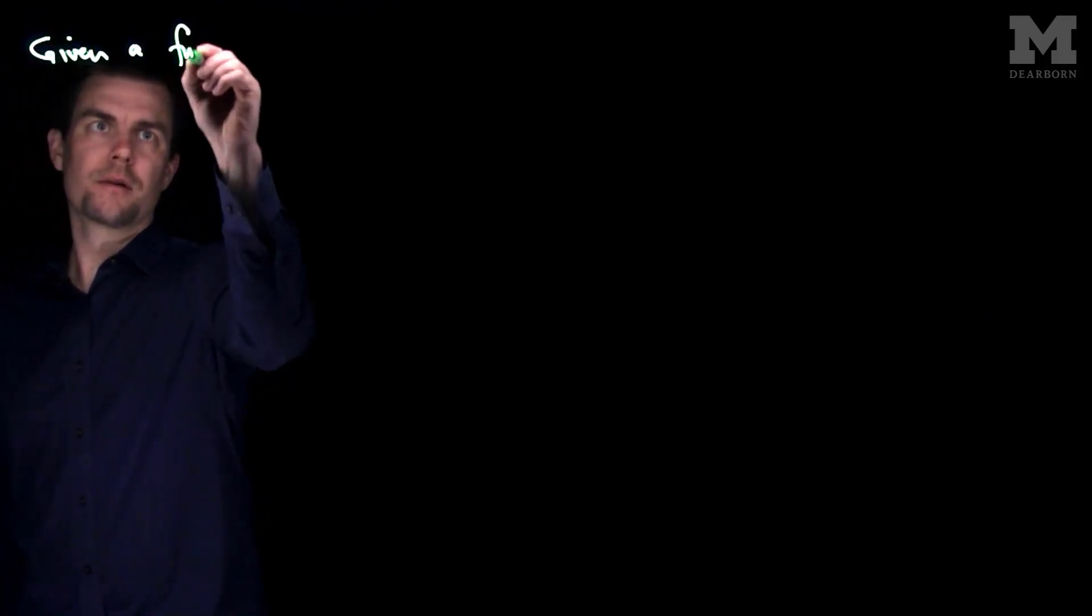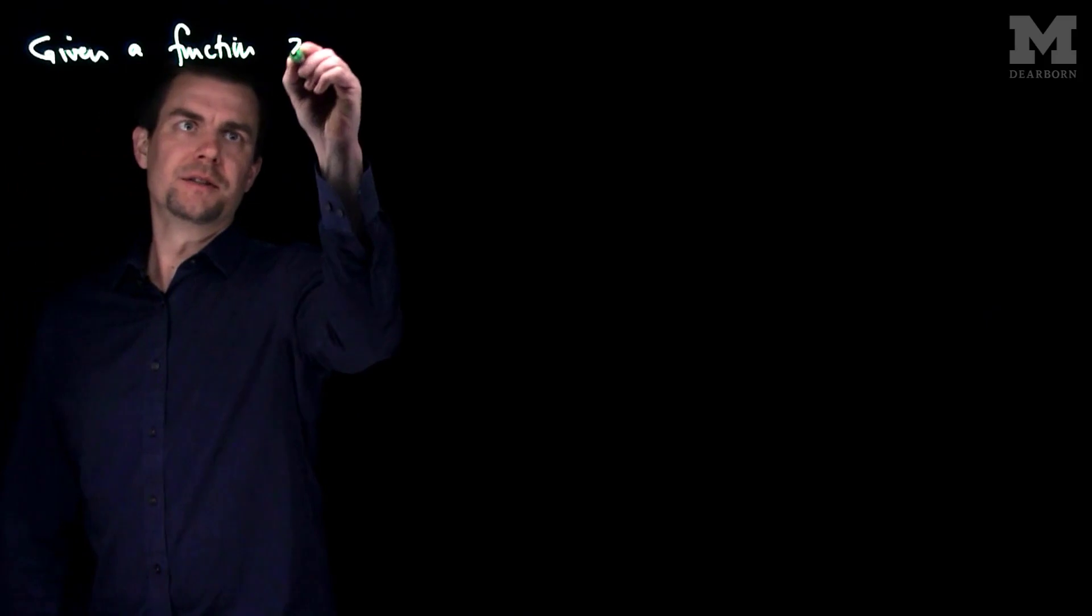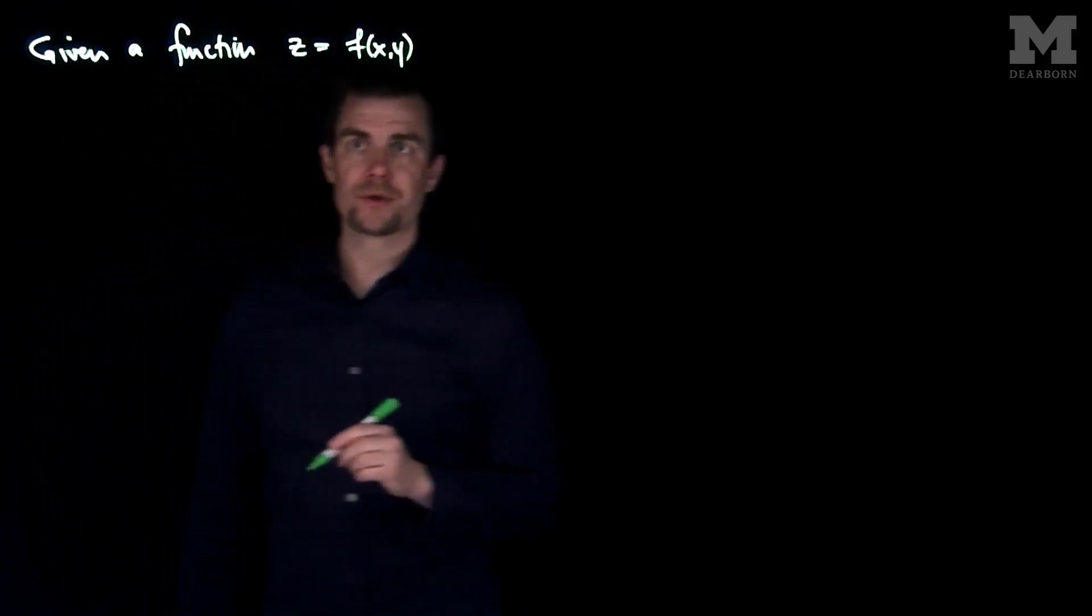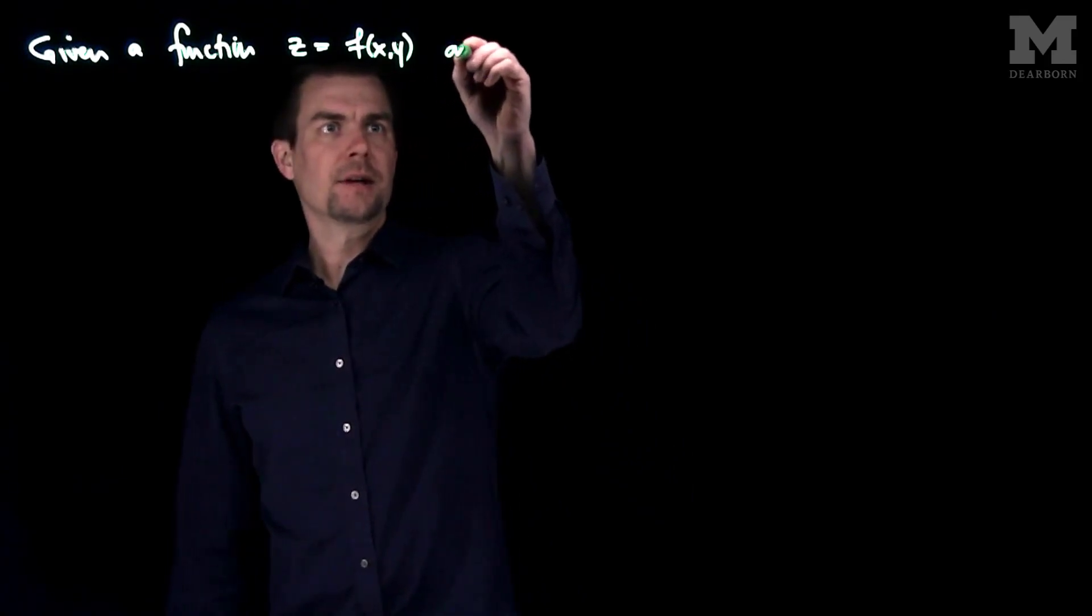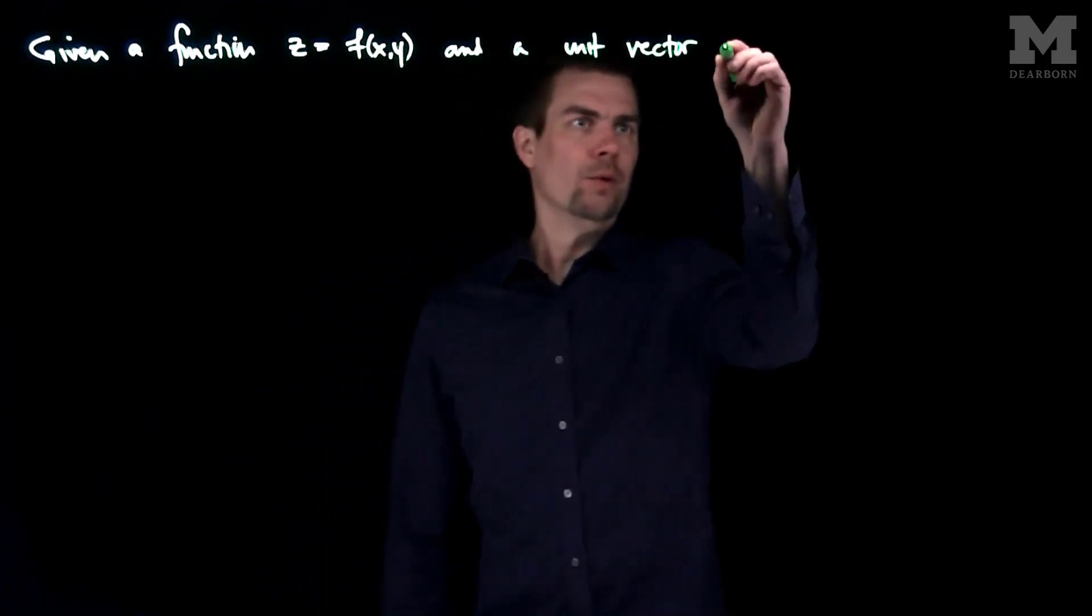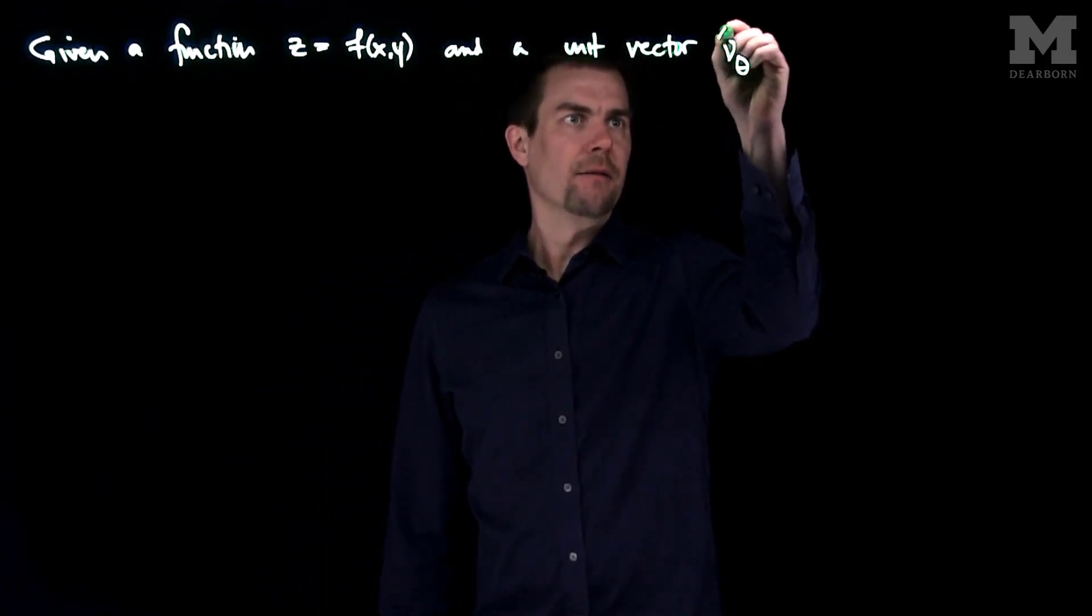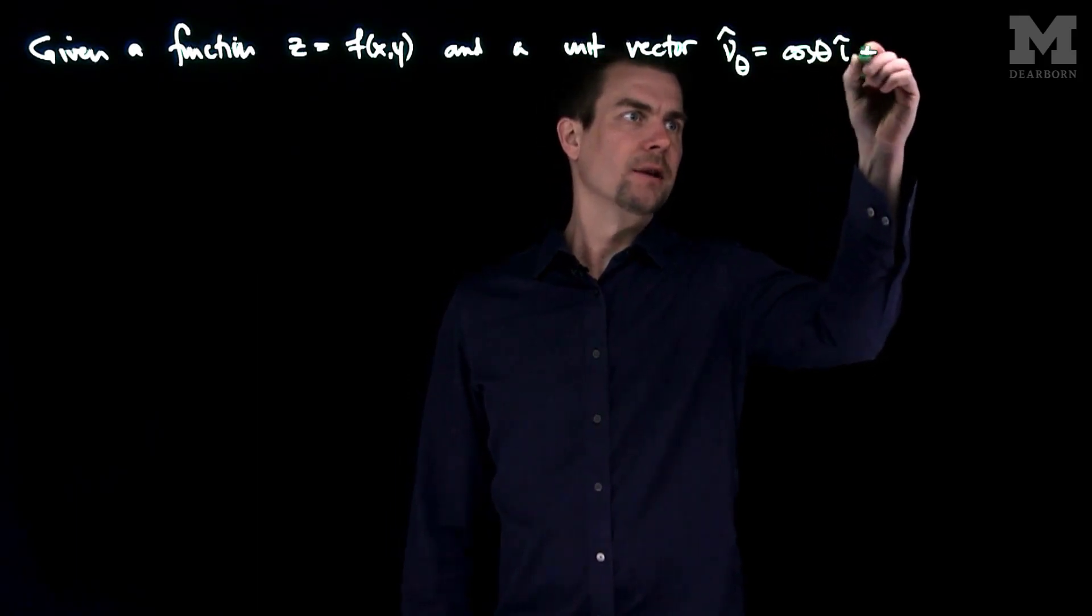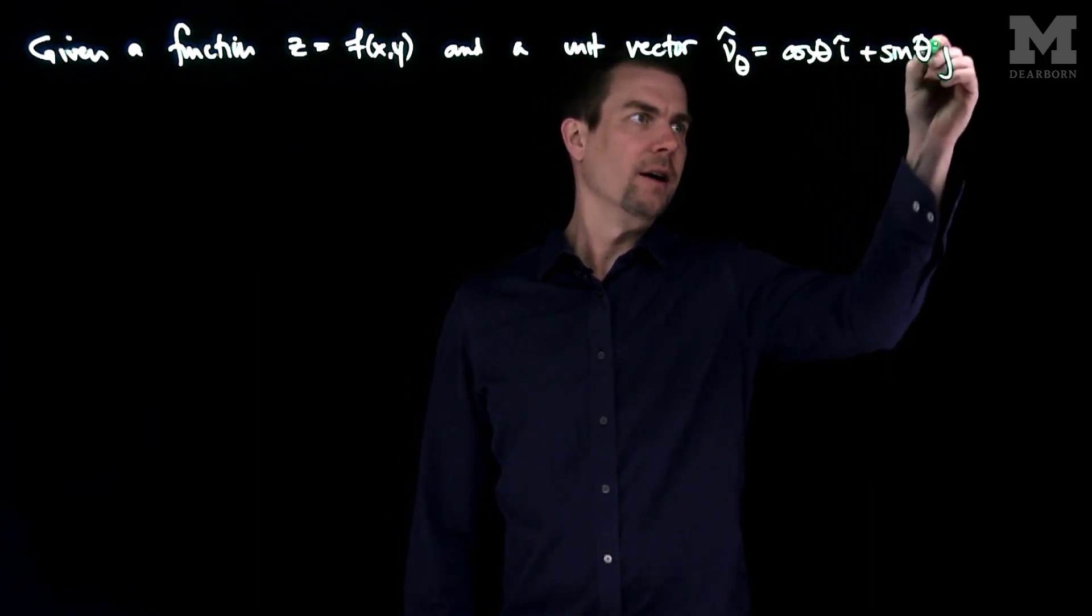If we're given a function z equals f of x and y, let's just work with a function of two variables, and a unit vector which we'll write as nu hat of theta, which is cosine of theta i hat plus sine of theta j hat,